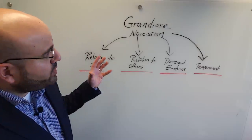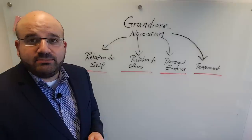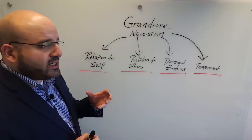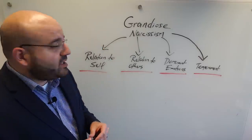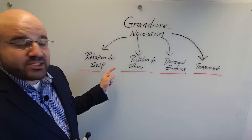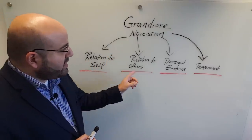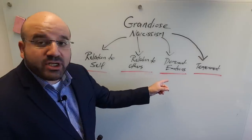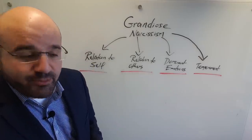I want to look at grandiose narcissism in more detail in this video. In order to do that, I'm going to examine this variant of narcissism across four domains: the relation the grandiose narcissist has to the self, the relationship to others, and the dominant emotions and aspects of their temperament.